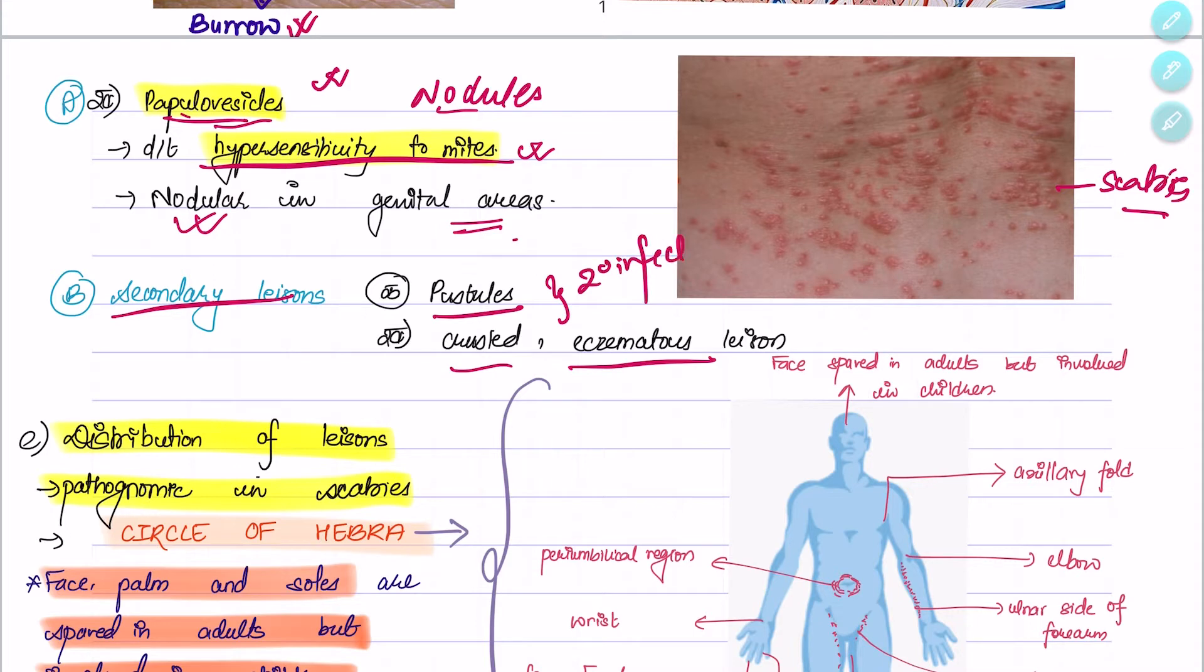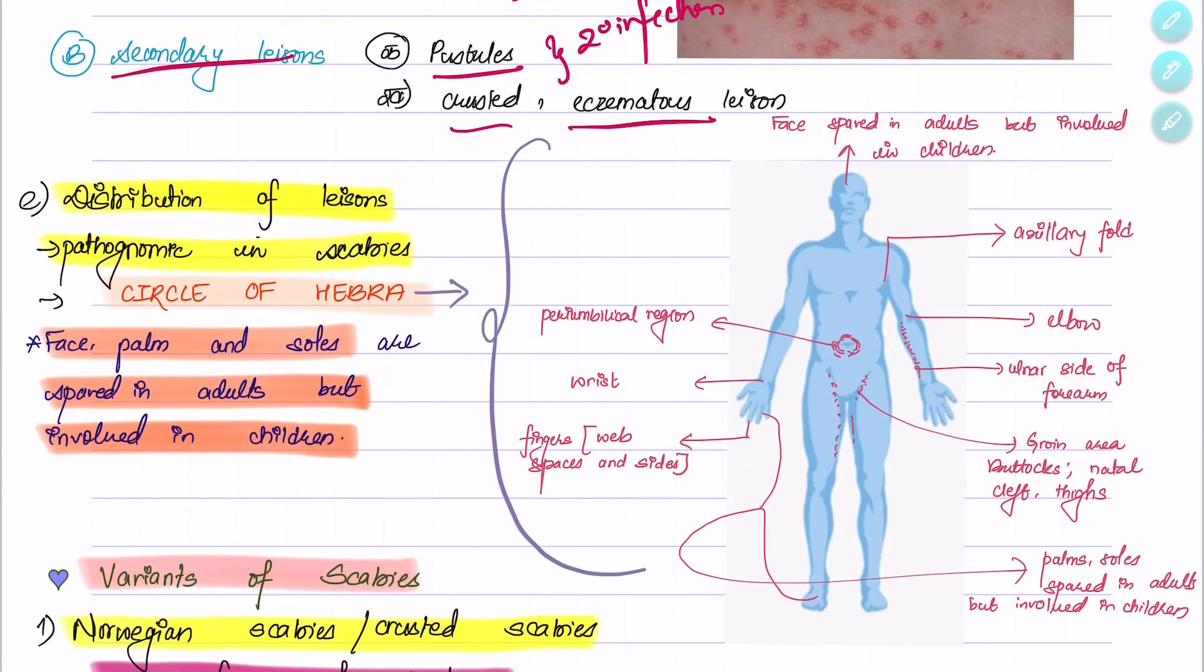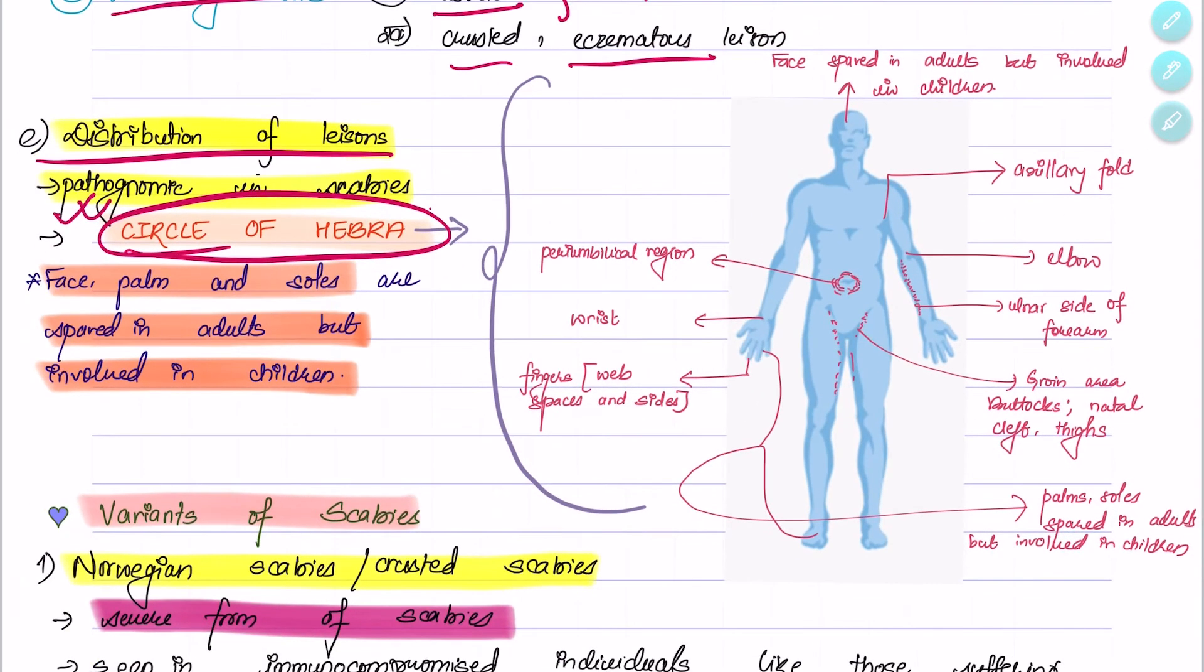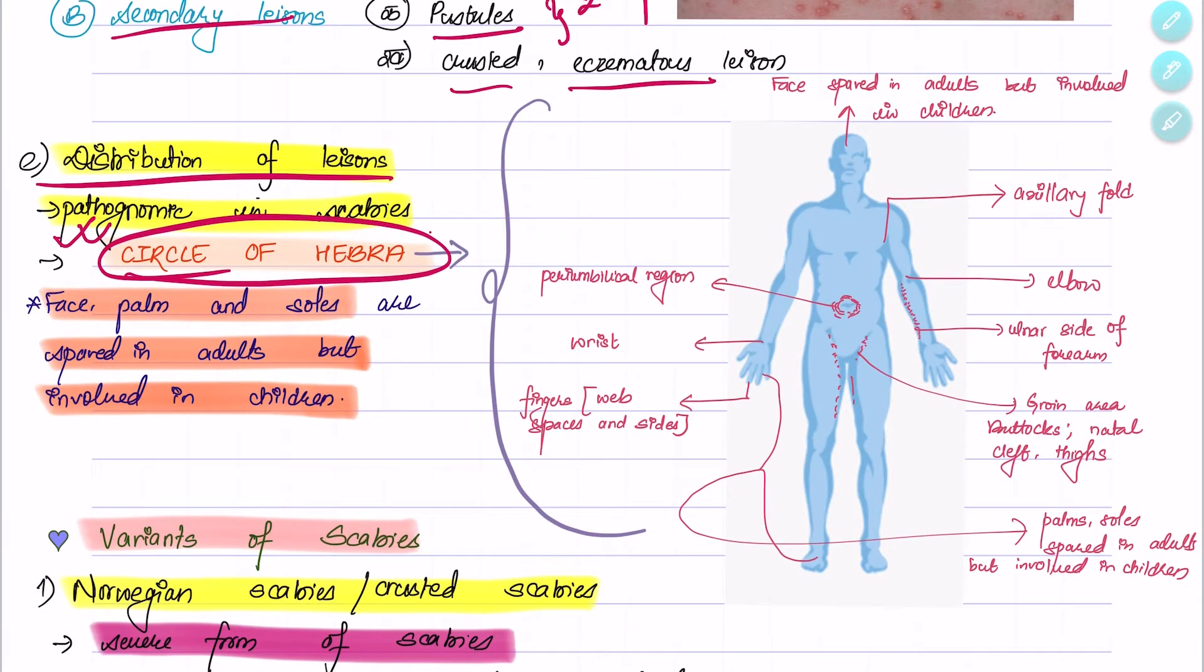The distribution of lesions is pathognomonic in scabies—that is, in the circle of Hebra—formed by many regions like the axillary fold, elbow, ulnar aspect of the forearm, wrist, periumbilical region, groin area, buttocks, natal clefts, and thighs.